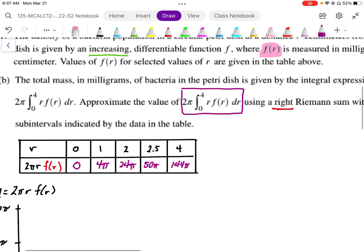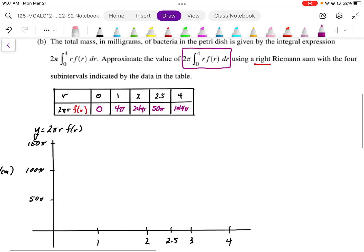Those are values that we're going to use for a graph. So we're going to plot these values in. At 0 we get 0. At 1 we get 4π, which is very low down here.